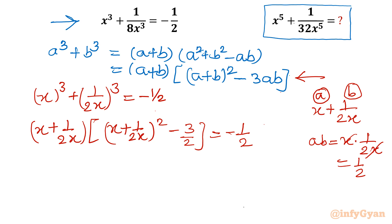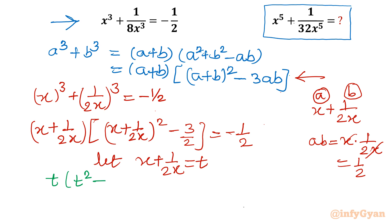Let x + 1/(2x) = t. Then we have t(t² - 3/2) = -1/2. Expanding: t³ - 3t/2 + 1/2 = 0. This is a cubic equation in t.